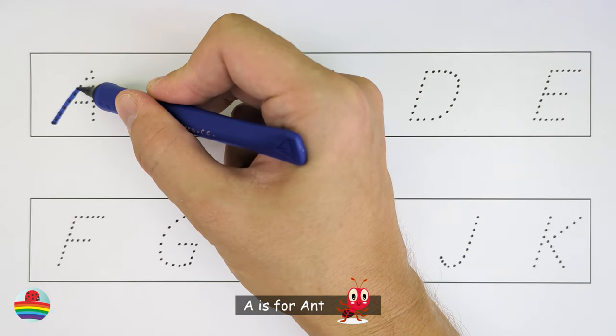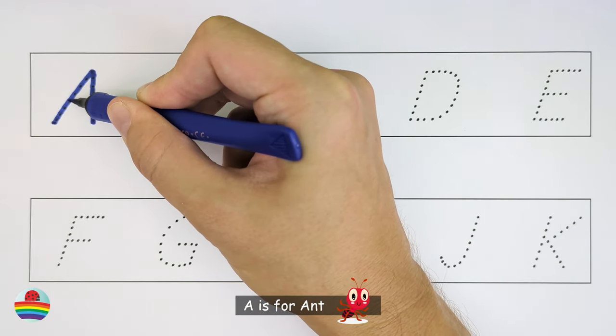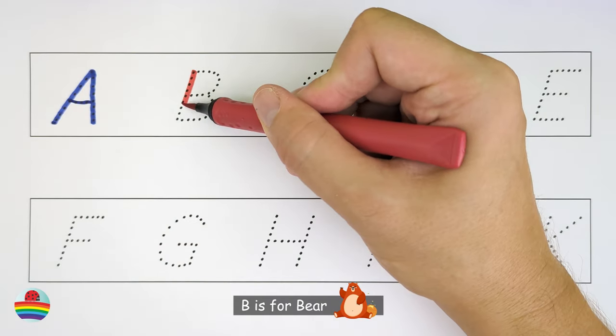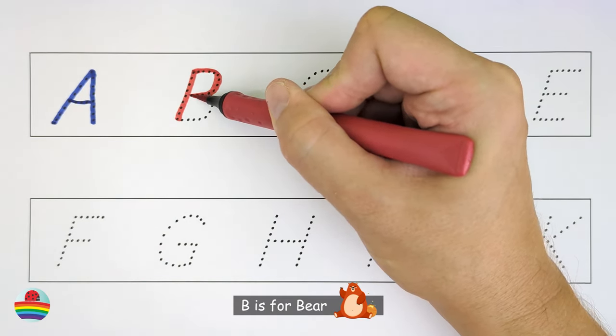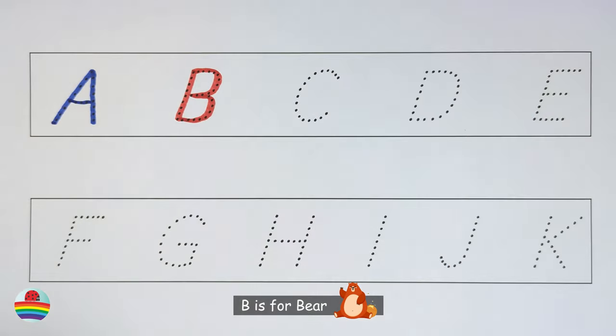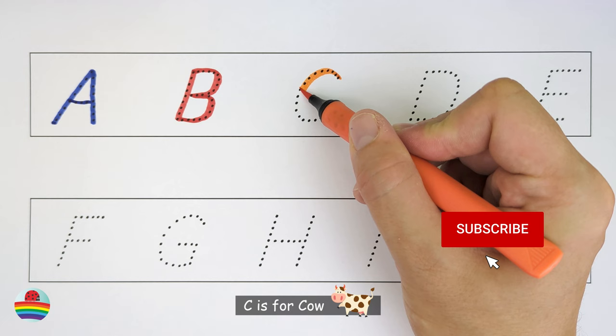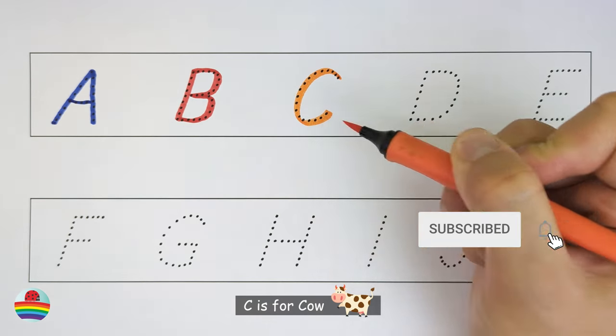A. A is for Ant. A. B. B is for Bear. B. C. C is for Cow. C.